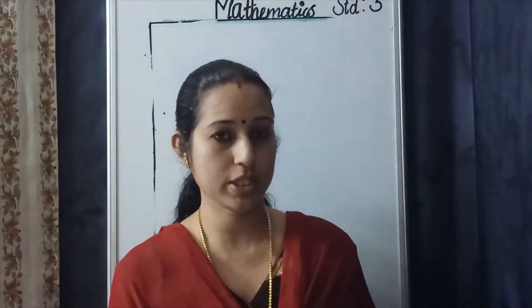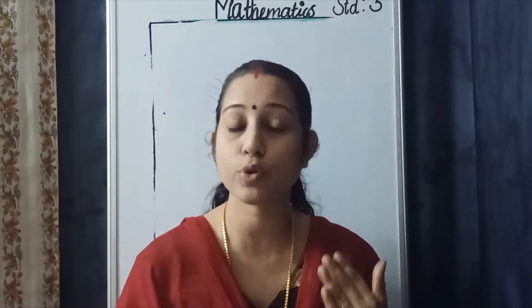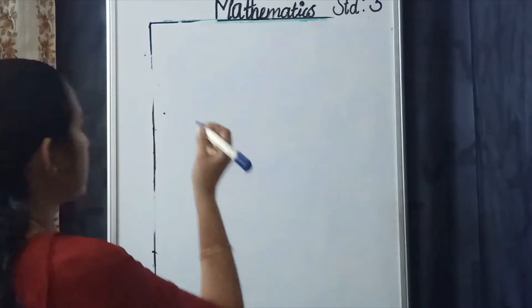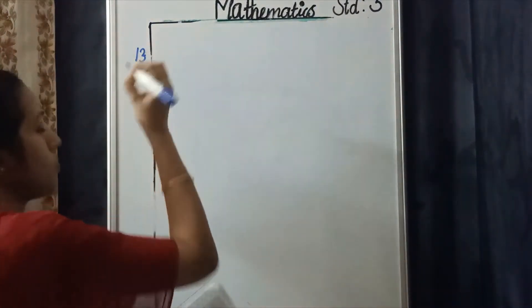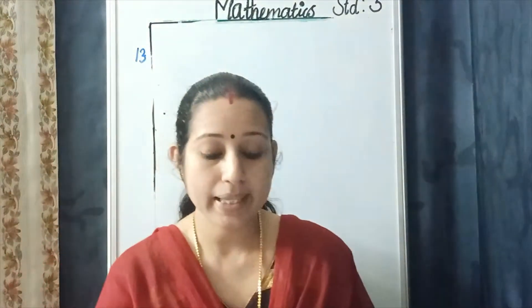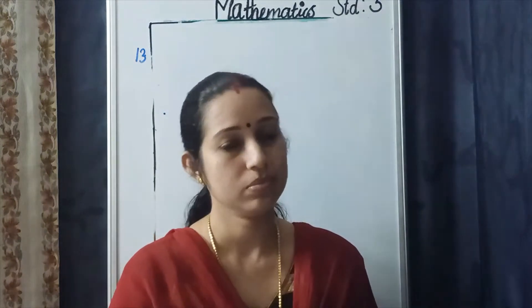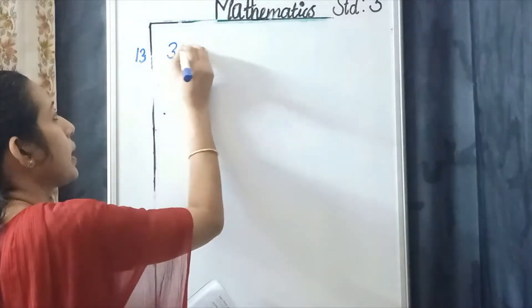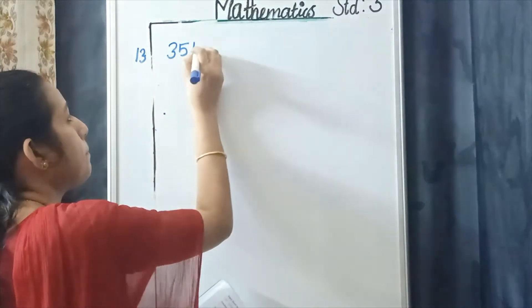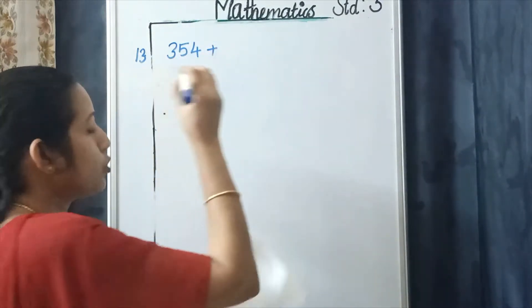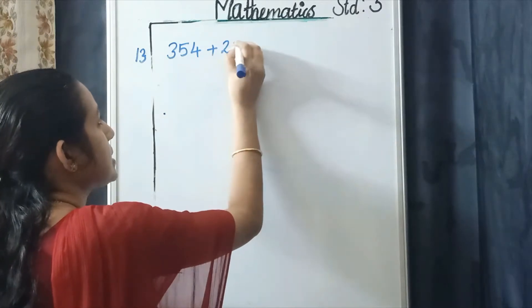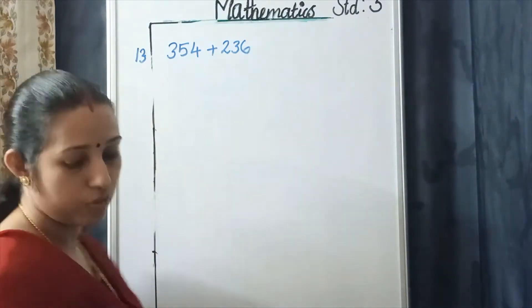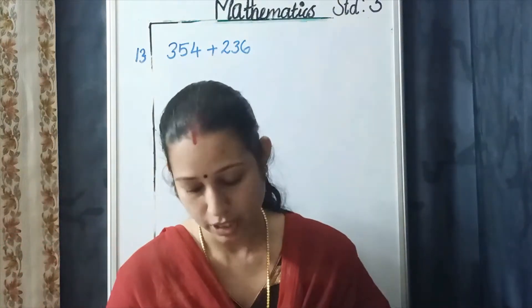Next, short answer question. In this type of question, we have to write the steps. So the question number first, question number 30. What is the question? Estimate the sum of the following. Find the estimates. The numbers are 354 plus 236. Two or three more questions. We have to write the steps. So how do we write?